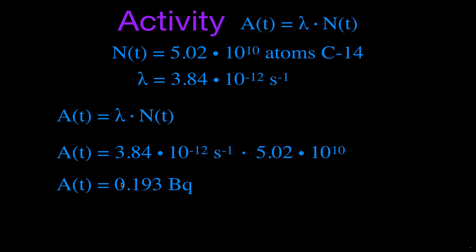The activity of carbon-14 in a one-gram sample of carbon from living tissue is 0.193 becquerels, or 0.193 decays per second. If you have more carbon, the activity is proportionally more; if you have less, it's less. For example, a kilogram of carbon would have 1,000 times the activity — 193 becquerels, or 193 decays per second.